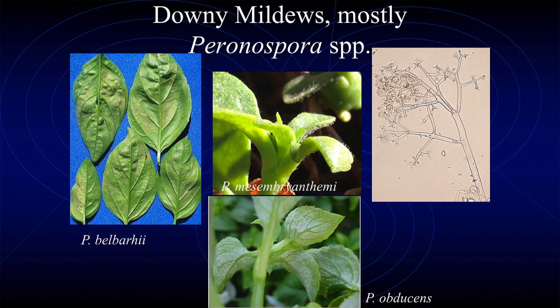Downy mildews - we've been getting lots of new downy mildew diseases. You may have been wondering why your impatiens didn't do so well in the last couple of years - new import, downy mildew disease on impatiens. How come your basil wiped out last year? Downy mildew - another import that's not supposed to be here. Where did we find them in California first? San Diego County. Things love to live here.